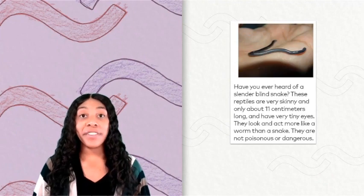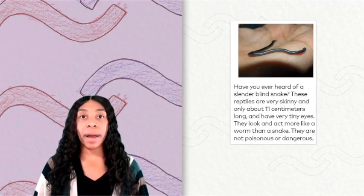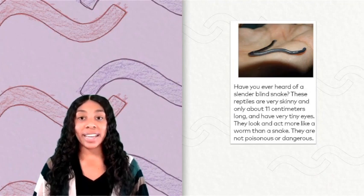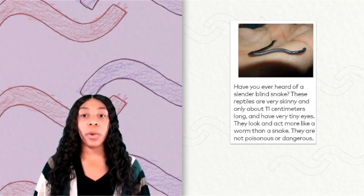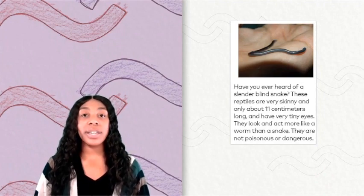Have you ever heard of a slender blind snake? These reptiles are very skinny and only about 11 centimeters long and have very tiny eyes. They look and act more like a worm than a snake. They are not poisonous or dangerous.